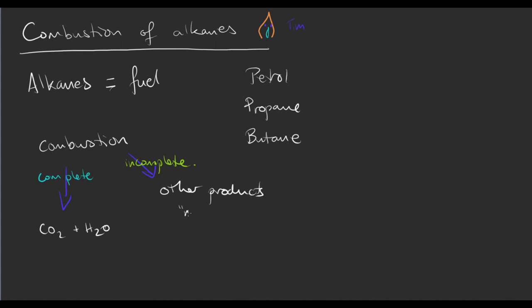Incomplete combustion can give you a mix of nasty products — partial oxidation products from ethene, ethane, or longer chain hydrocarbons. That often happens when there's insufficient oxygen. If you're burning something in a nice flame with lots of oxygen, like in a Bunsen burner, you tend to get complete combustion and all that's left is carbon dioxide and water. With incomplete combustion, you get a lot of other products because there's not enough oxygen to complete the combustion.